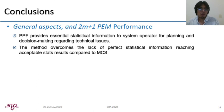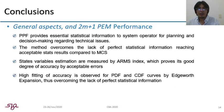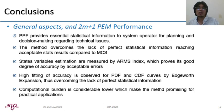Some conclusions are drawn from this study. Probabilistic power flow provides essential statistical information to system operators for planning and decision making regarding technical issues. The method overcomes the lack of perfect statistical information reaching acceptable statistical results compared to Monte Carlo. State variables estimations are measured by ARMS index, which proves a good degree of accuracy by acceptable errors. High fitting accuracy is observed for PDF and CDF curves by Edgeworth expansion, thus overcoming the lack of perfect statistical information. And finally, computational burden is considerably lower, which makes the method promising for practical applications.